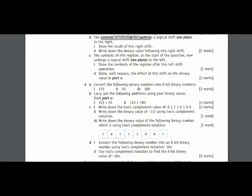Today I am going to solve question number four of exam style questions of chapter number one. In question number four part A, you have been given three numbers — 128, 55, and 180 — and you have been asked to convert them into binary form.